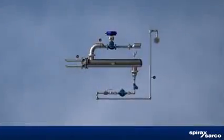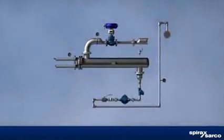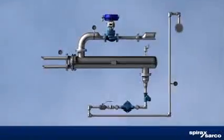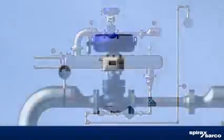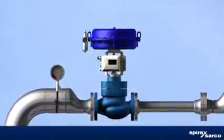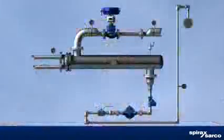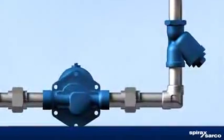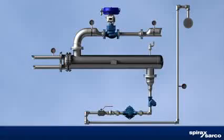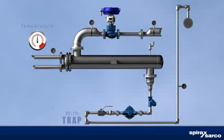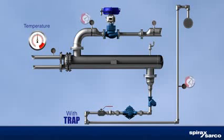The most common process heating heat exchanger hookup involves a temperature control valve on the steam line to the heat exchanger and a steam trap on the condensate line from the heat exchanger. The shell side is the steam space. A control sensor signal at the tube side outlet is used to throttle the steam control valve to maintain set point temperature.